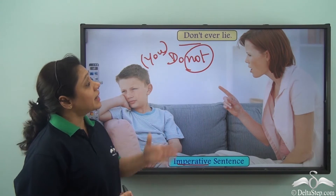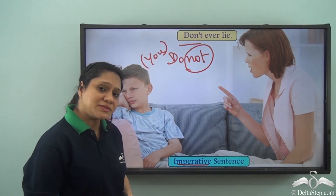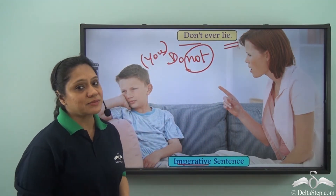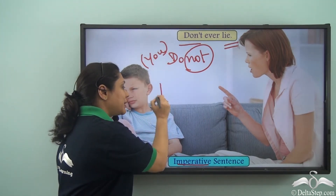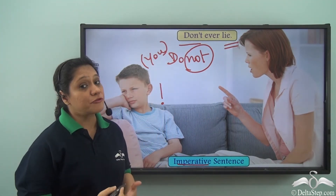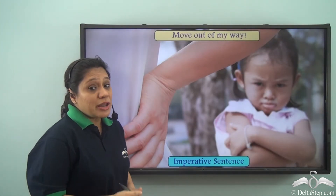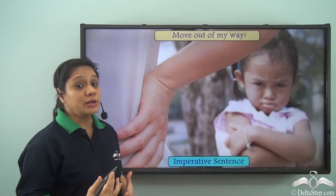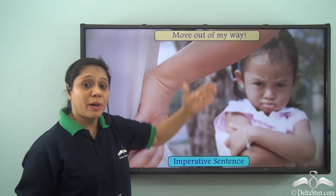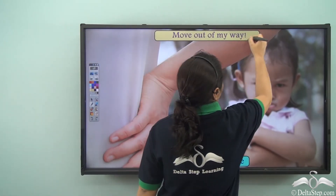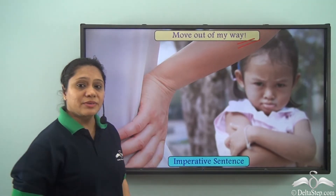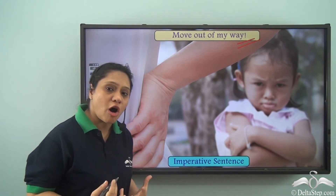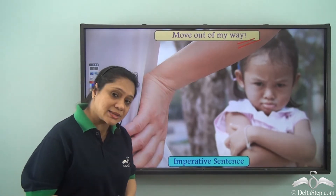Now, up till now we have learnt that imperative sentences end with a full stop. But sometimes imperative sentences also end with an exclamation mark. If somebody says 'move out of my way!' they are using a very strong emotion to express a command. In such a case we end the imperative sentence with an exclamation mark. So imperative sentences with a very strong feeling attached end with an exclamation mark.